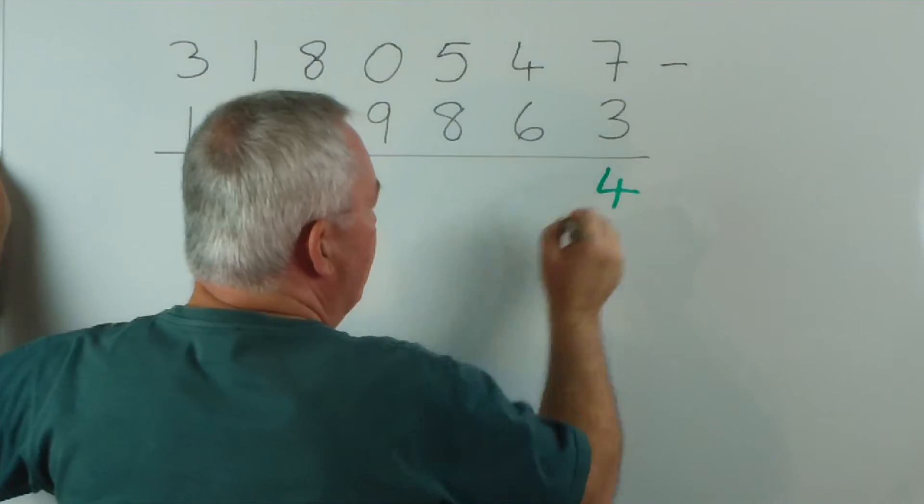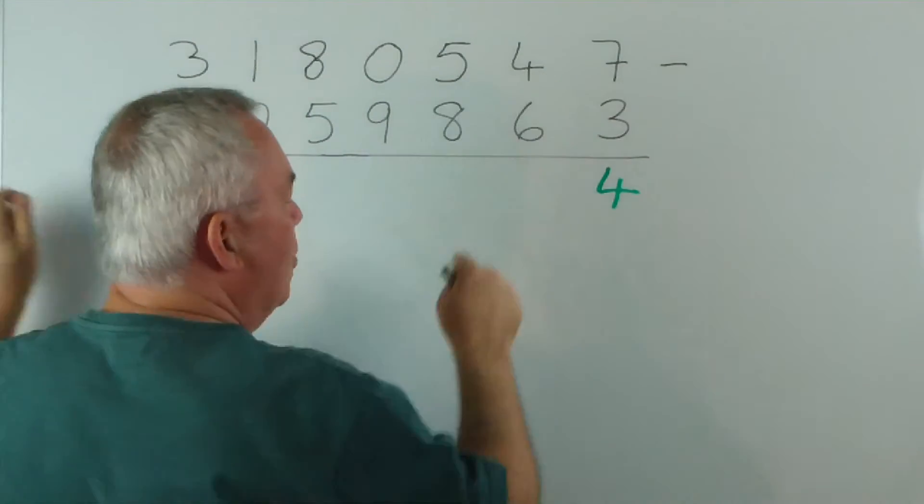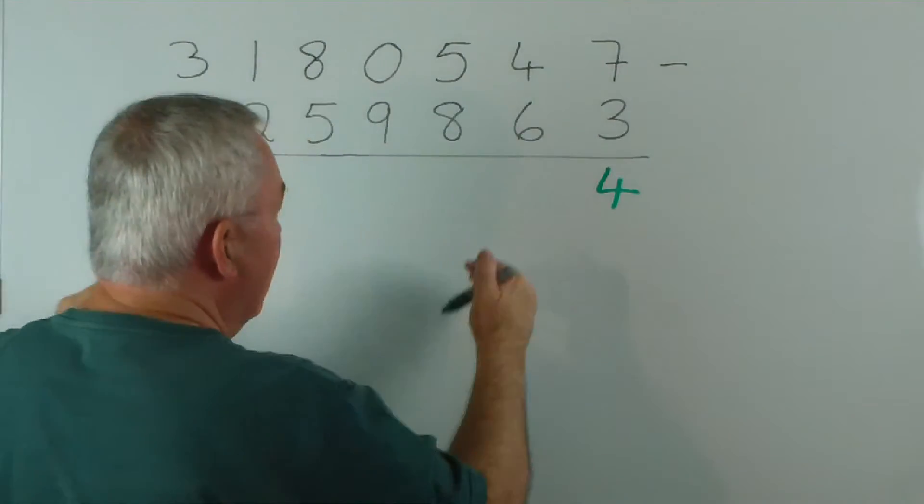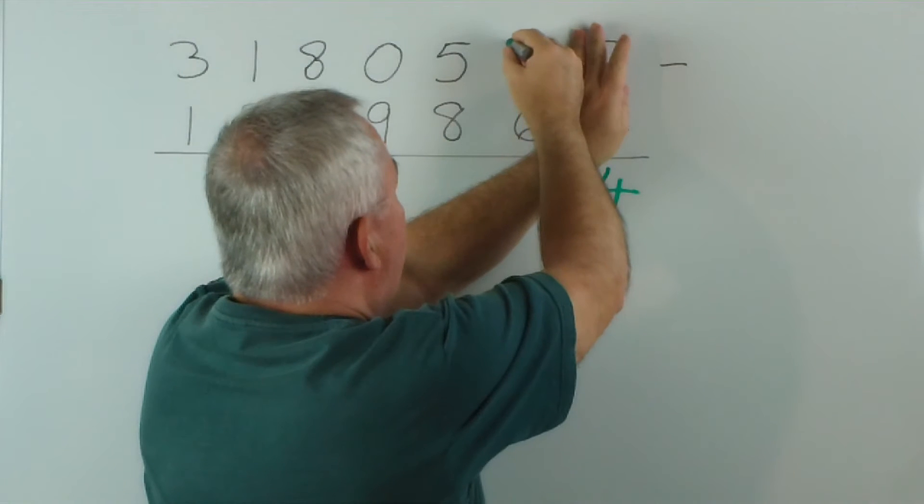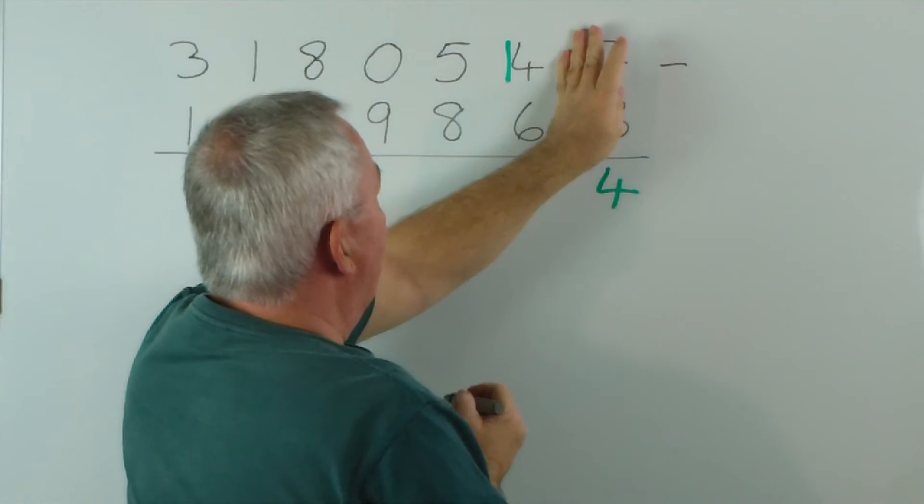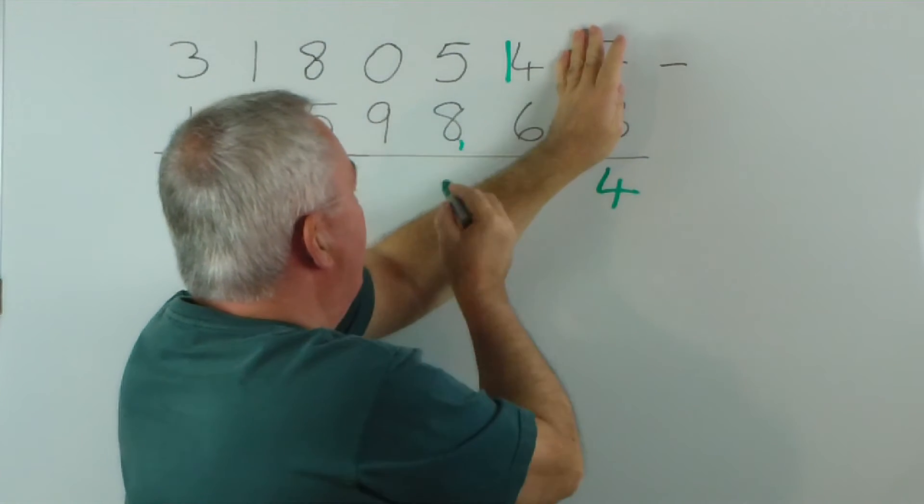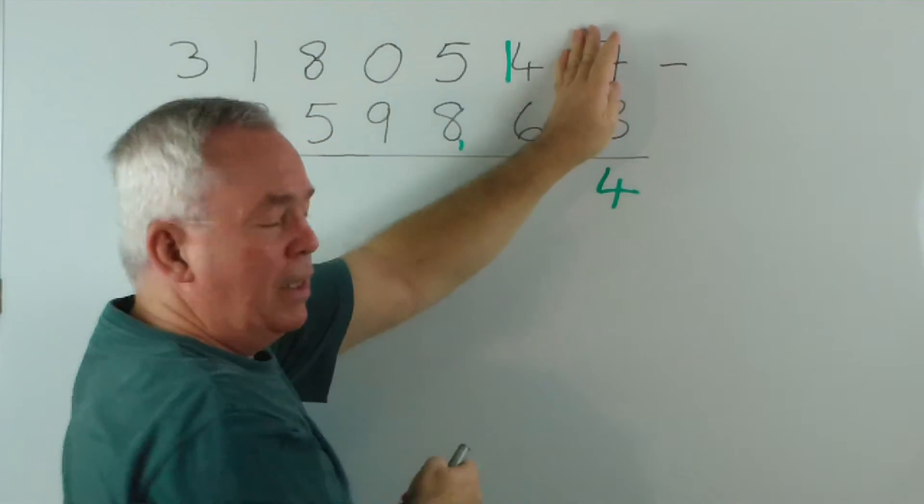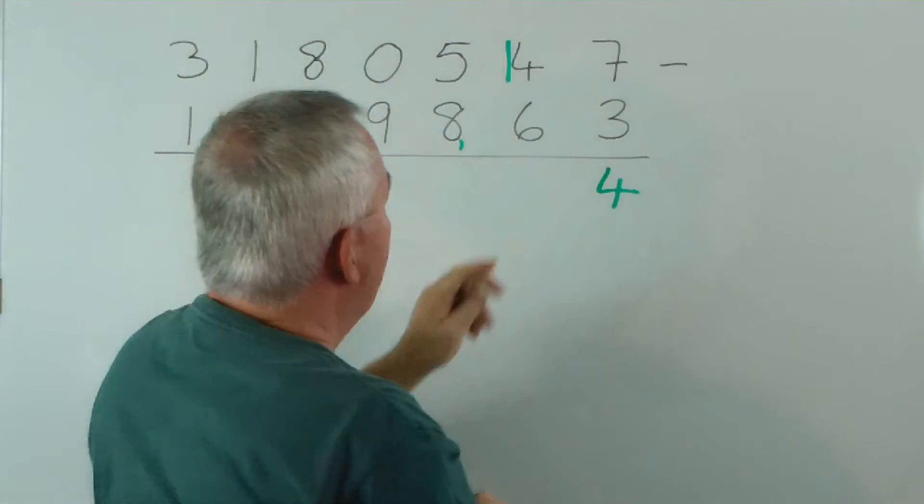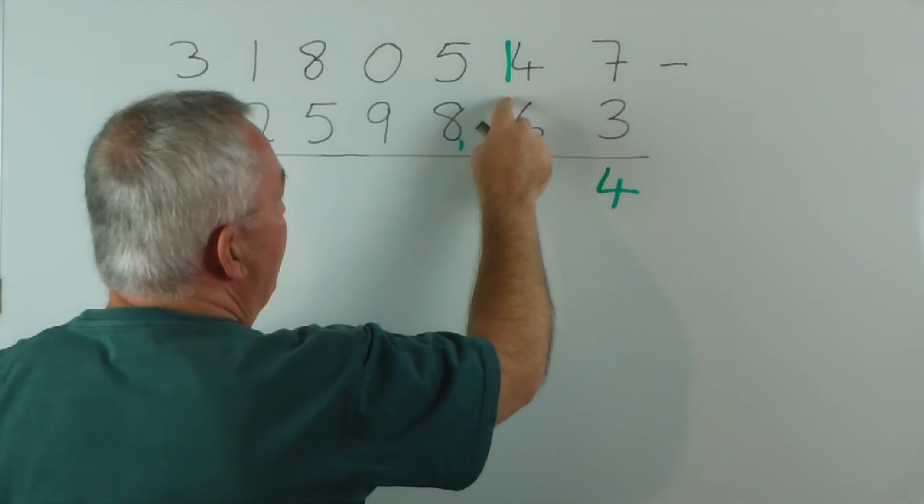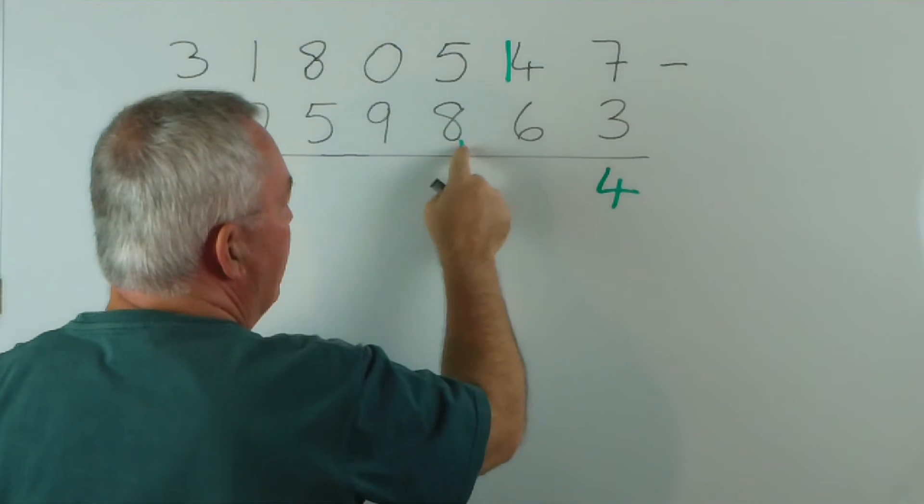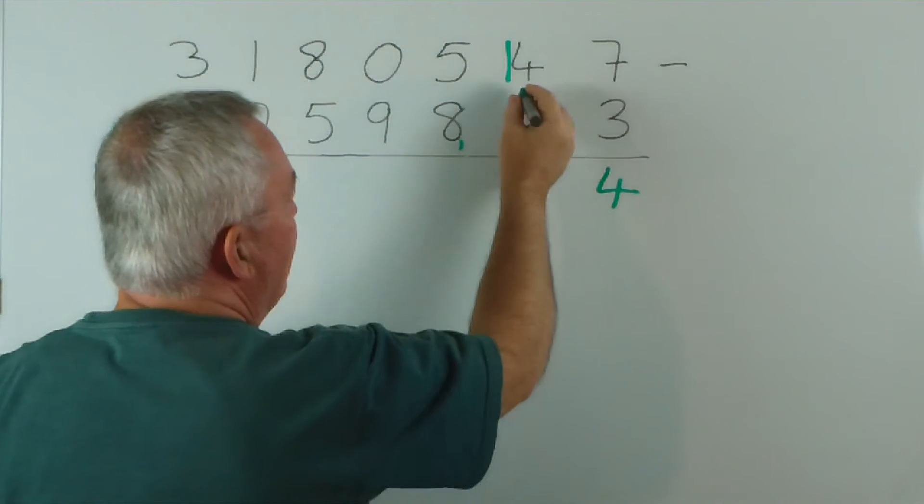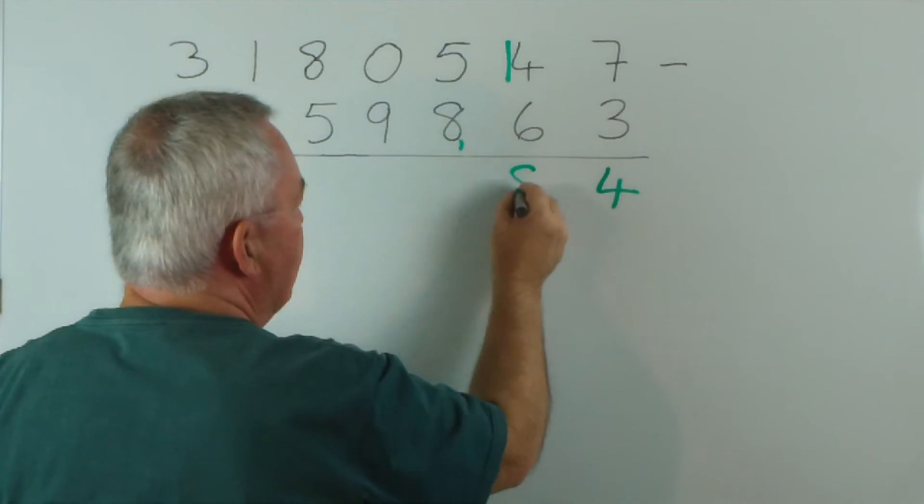Three from seven is four. We certainly can do that. Six from four we can't do. So, we add 10 to this column and we add 10 to the earlier column on this number. So, they've both increased by 10. It's just that this looks like 14 and this looks like a 1 in this column. 14 take away 6 is 8.